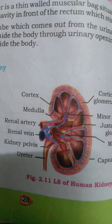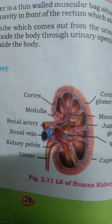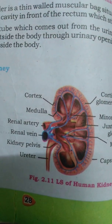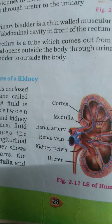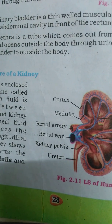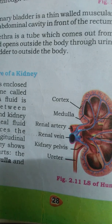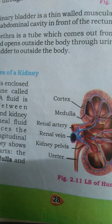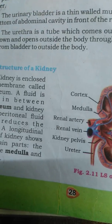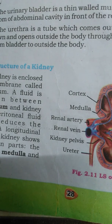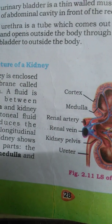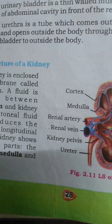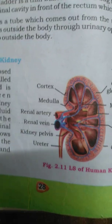The first part is the cortex, which is the outer dark brown portion and is covered by a fibrous capsule. The inner part, which is lighter in color, is called the medulla, and it consists of renal pyramids and nephrons.